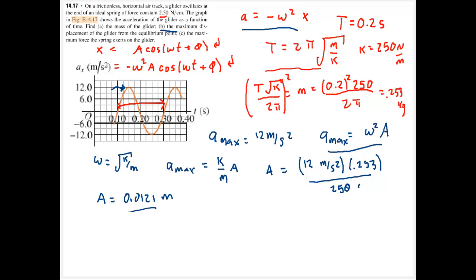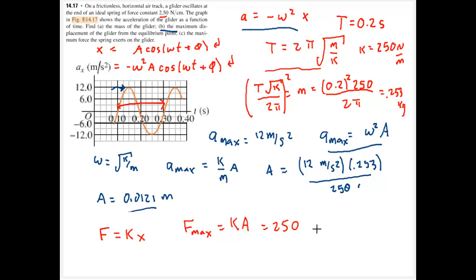Finally, the maximum force: using Hooke's law, force equals k times x, and maximum force occurs at maximum displacement. So maximum force equals k times amplitude: 250 times 0.0121 meters, giving a maximum force of approximately 3.03 newtons.